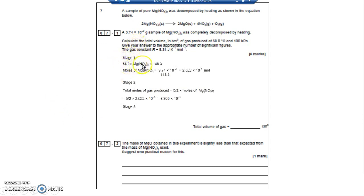So MR of magnesium nitrate, I've got an Mg which is 24. Inside the bracket I've got 1N and 3Os but everything is multiplied by the number outside the bracket. So I've got 2Ns and 6Os. So I've got a magnesium with a mass of 24, 2 14s for the nitrogens and 6 16s for the oxygen at 148.3. Moles is mass divided by MR, so 3.74 times 10 to the minus 2, which is the mass of the sample, divided by 148.3, 2.522 times 10 to the minus 4.